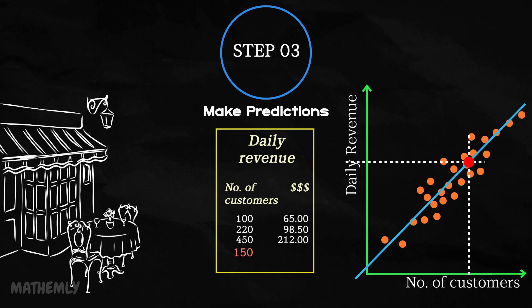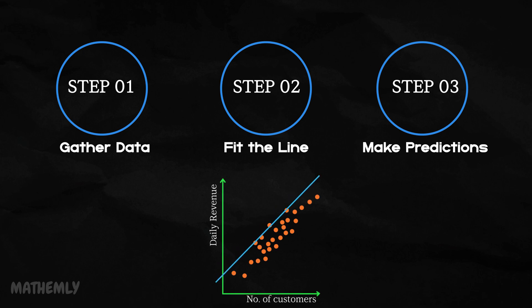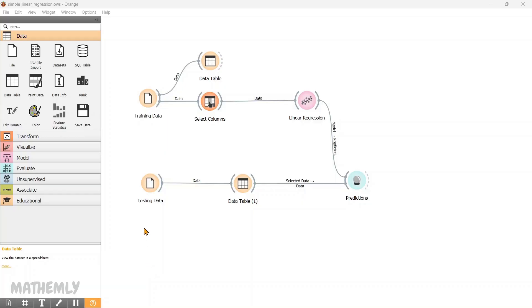While we have focused on predicting revenue using one input variable, the customer count in this example, there can be more complex scenarios with multiple factors such as the day of the week or special promotions to refine your predictions even further. And that is multiple linear regression, which we will be covering in the next video. By following these steps, simple linear regression takes raw data and transforms them into a clear predictive model that you can rely on. Now, let's move into orange software.